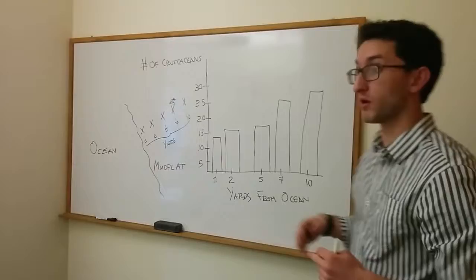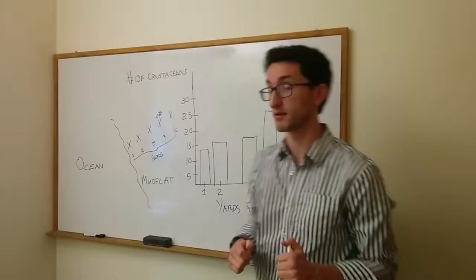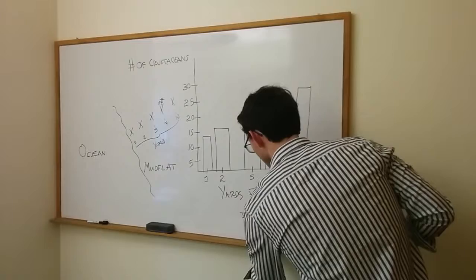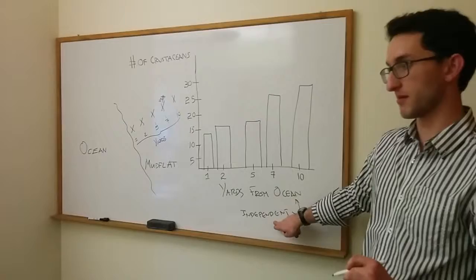Because we could have collected at one, two, three, four, and five yards, we could have collected at one, five, ten, and fifteen yards, one hundred, two hundred, and three hundred yards. We were completely in control of which yards we collected at. And so in science we call that the independent variable.